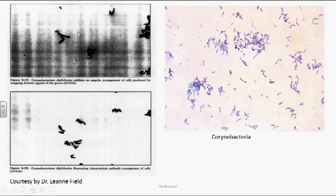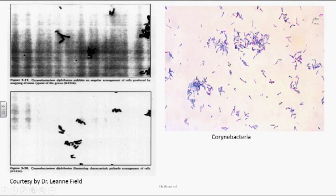These are micrographs of Corynebacterium diphtheriae. We can see V-shaped, reverse V, and X-shaped arrangements of the organism. Here we can see the Chinese letter appearance under gram staining, and in a color picture we can also observe reverse V-shaped and palisade arrangements of Corynebacterium diphtheriae.